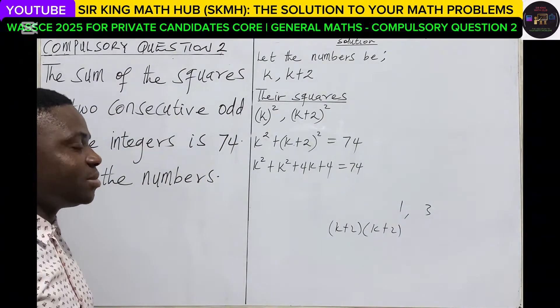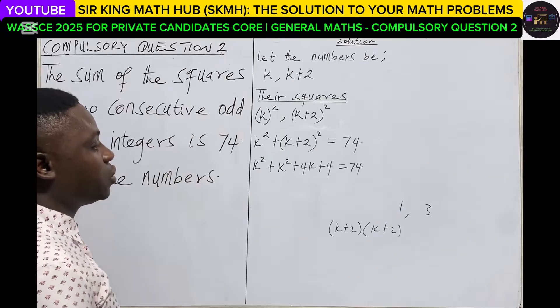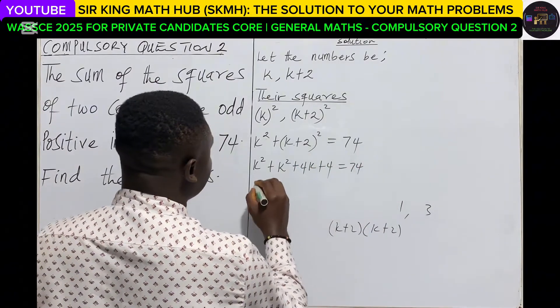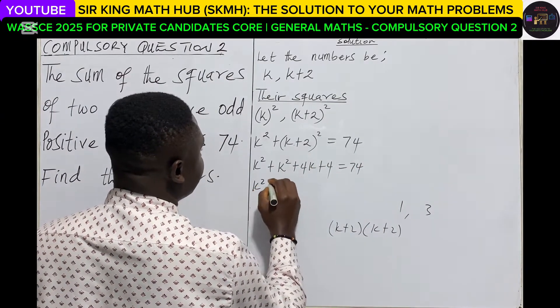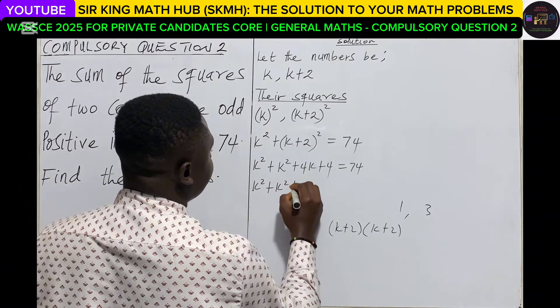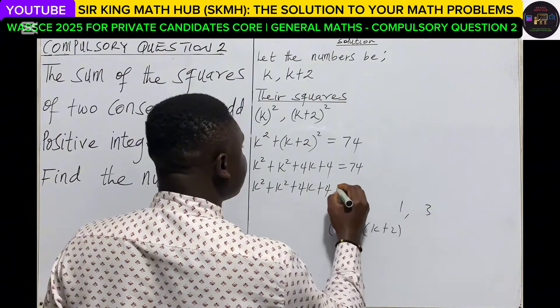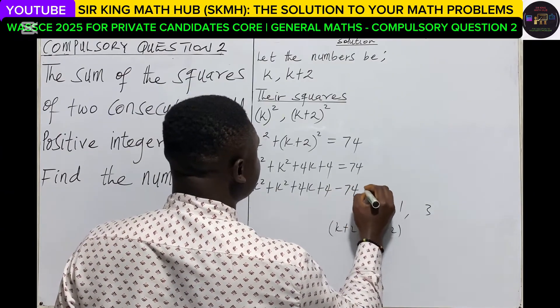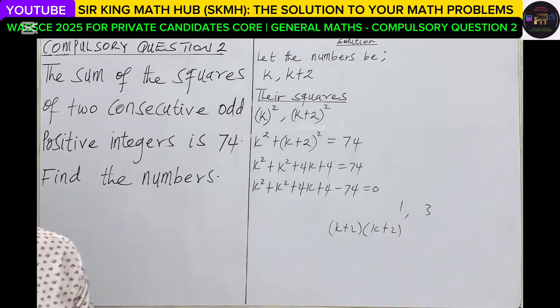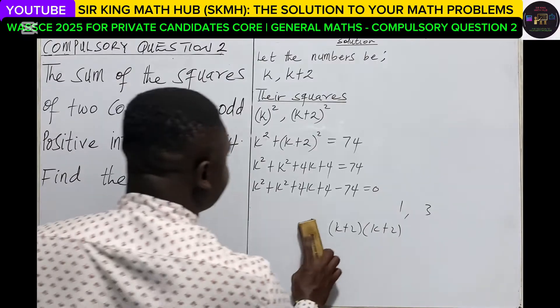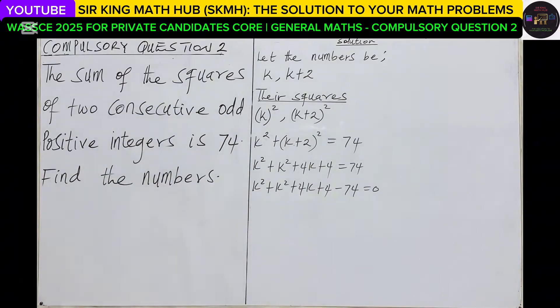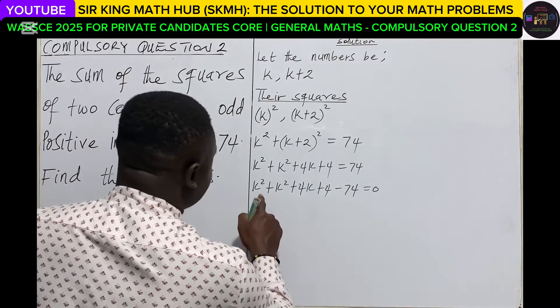You see that we are getting something like quadratic, so let's equate everything to zero. So we have k squared plus k squared plus 4k plus 4 minus 74 is equal to zero. We can still simplify to see that there are some like terms.